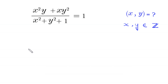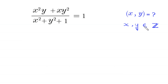Hello everyone, you are welcome. We will solve this algebra equation: (x²y + xy²) / (x² + y² + 1) = 1. Our job is to find all possible values of x and y such that x and y are integers.